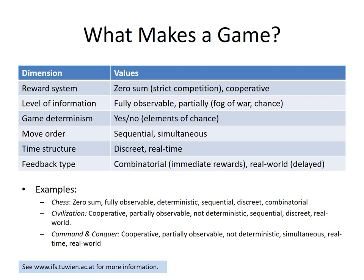The level of information is also very important. There are games that are fully observable — I always know everything on the Go board or the chess board. But the level of information might also be only partial. In the game of Civilization, for example, you have fog of war: areas not recently visited become blurred and you don't know whether there are enemy units there. There might also be an element of chance through dice. This is closely linked to whether or not the game is deterministic, which is always the case if it is fully observable, but need not be the case if there are elements of chance.